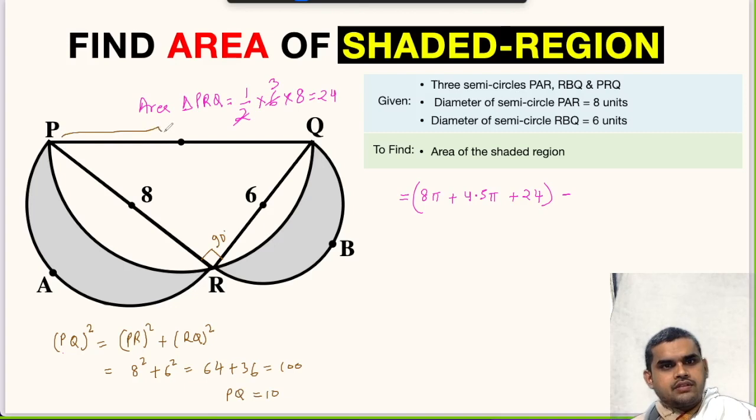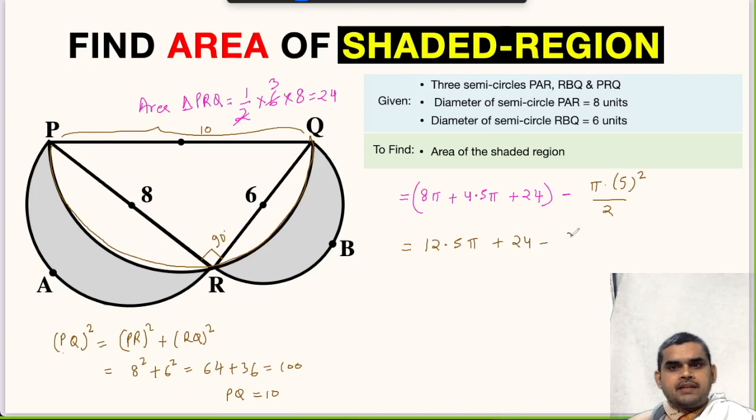The length of diameter PQ is 10. So area of semicircle PRQ will be 5² divided by 2, which is 25π upon 2. Now simply if we solve this, 8π plus 4.5π plus 24 minus 25π upon 2.